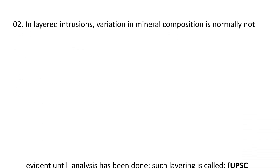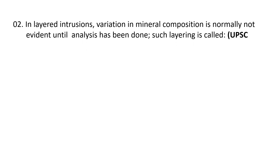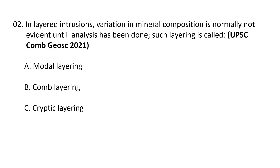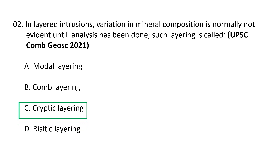Question 2: In layered intrusions, variation in mineral composition is normally not evident until analysis has been done. Such layering is called: (a) modal layering, (b) comb layering, (c) cryptic layering, or (d) rhythmic layering. The correct option is C — cryptic layering — which is a systematic variation in the chemical composition of certain minerals with stratigraphic height in a layered sequence.